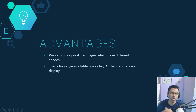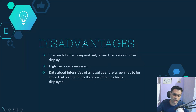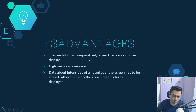The advantages of raster scan display include the ability to display real-life images with different shades, and a much wider color range compared to random scan displays. The disadvantages are that the resolution is comparatively lower than random scan displays, and high memory is required because all intensity values of the pixels must be stored in the refresh buffer.